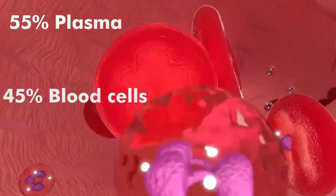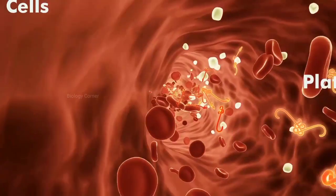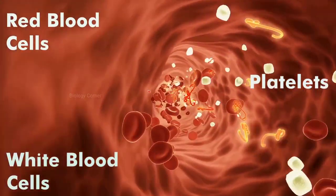Our blood contains about 55% plasma and the remaining 45% blood cells such as red blood cells, white blood cells and platelets.